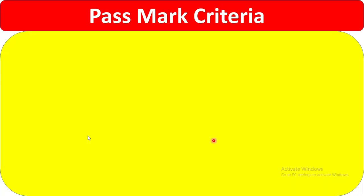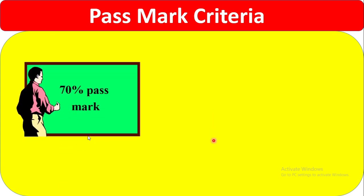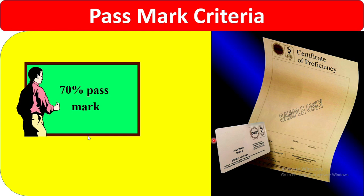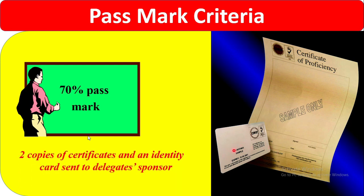Pass mark: 70% is required to pass this exam. A certificate of proficiency is provided to you by email. Two copies of certificates and an identity card are sent to the delegate. Previously the certificate was sent to the sponsor, but now the company will provide the certificate of proficiency and identity card directly to you.